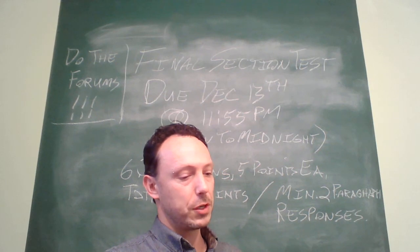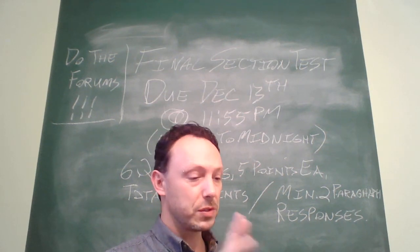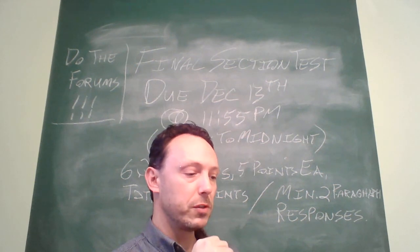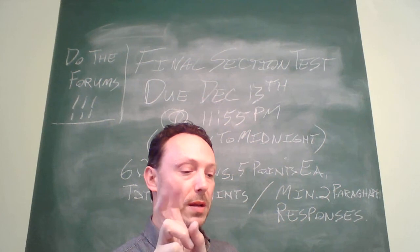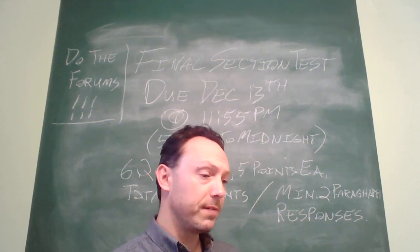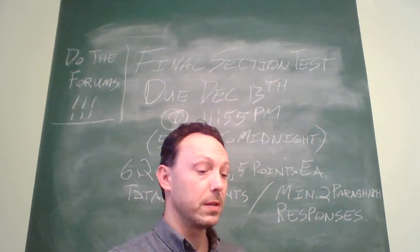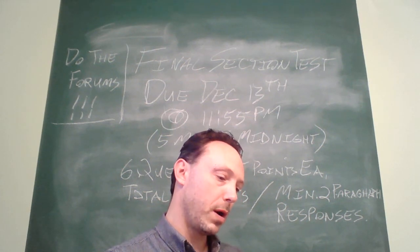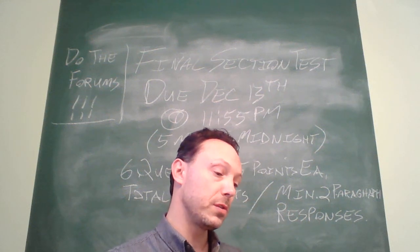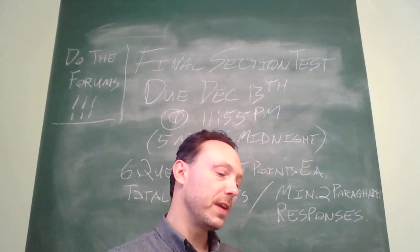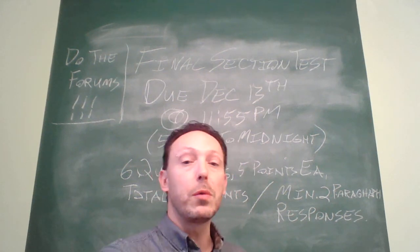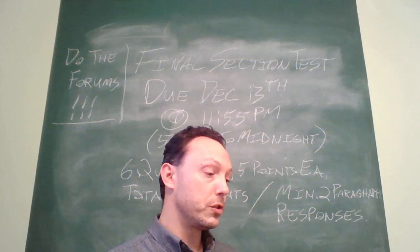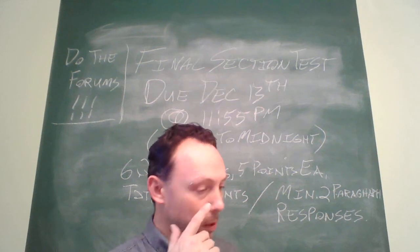Question number two on Nietzsche. Nietzsche claims, quote, we do not object to a judgment just because it's false. That's probably what's strangest about our new language. It's Beyond Good and Evil, page seven. What basis for judgment does Nietzsche suggest in the place of a true and false analysis? So I've given you the page reference. I've given you the reference for this. That's page seven. That is section four. This is a question related to the entire tenor of the kind of critique that Nietzsche is giving with regard to our moral beliefs and our moral values. So it's important to engage with.